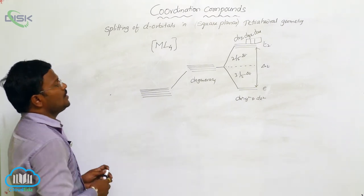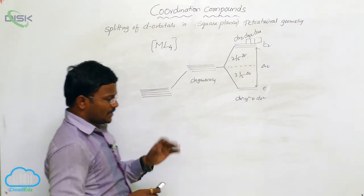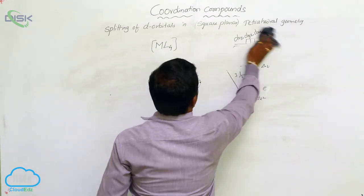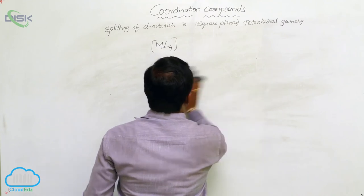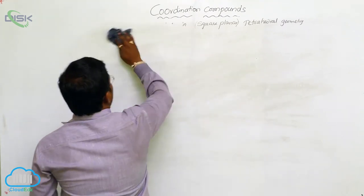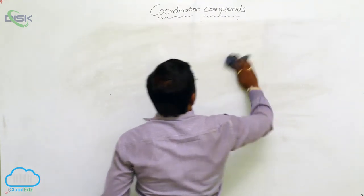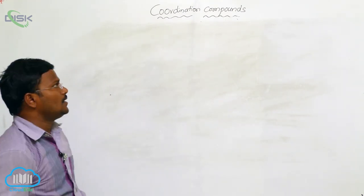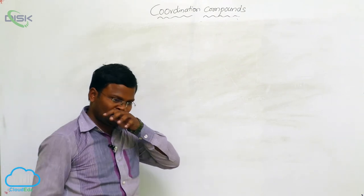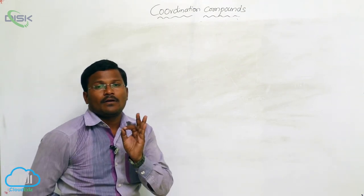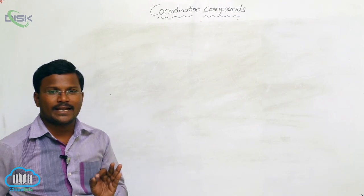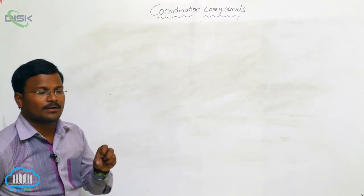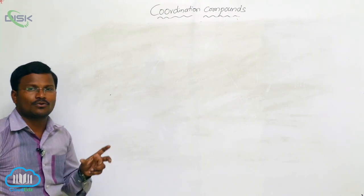So this is valence bond theory. This valence bond theory helps us explain the color of coordination complexes. Crystal field theory is an electrostatic theory — it explains coordination complexes based on electrostatic forces.